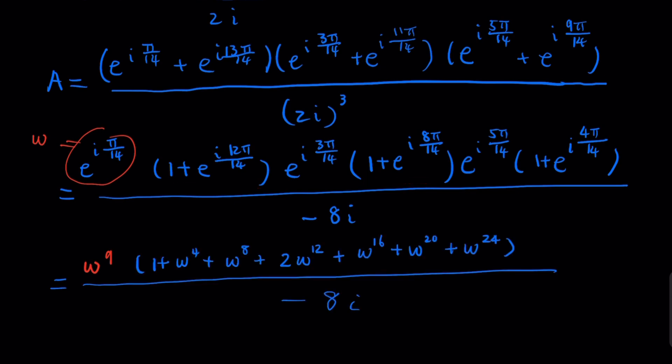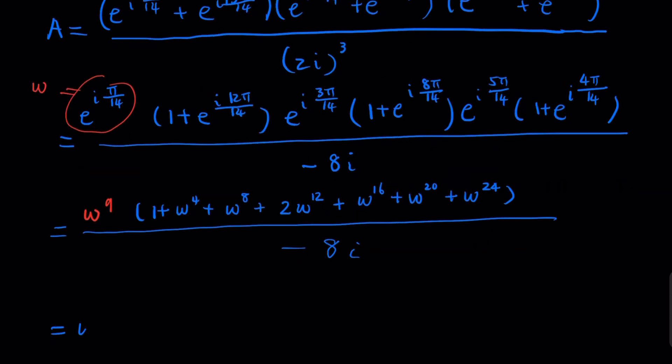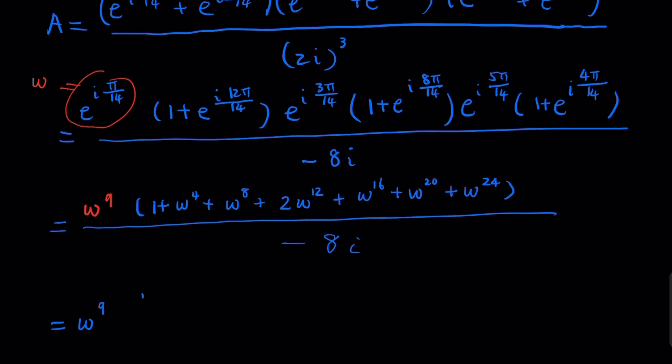When you look at this, this is a geometric sequence, right? Except there's an extra term here. This geometric sequence happens to cancel. Let's write it down. This is equal to, ω to the ninth power is going to be (1 - ω^9)/(1 - ω^4). Now ω^28, so here's 14, right? So 28 is going to be 2π, that's going to be one.